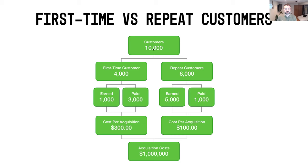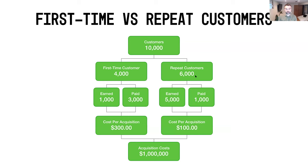Let's say we've got a scenario with 10,000 customers at the top line, split 40/60 — so 4,000 are first-time customers and 6,000 are repeat customers. This would represent a growing or scaling business where you've got more repeat customers than first-time customers. We'll also look at scenarios for businesses just starting out, still growing with more first-time than repeat, and what the scaling option looks like.